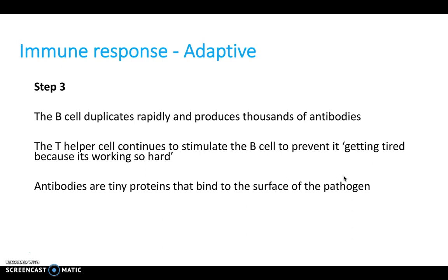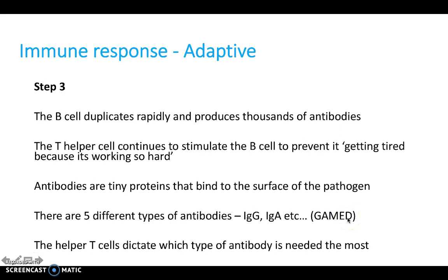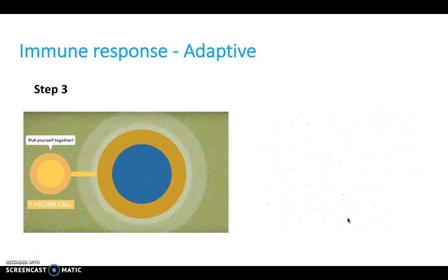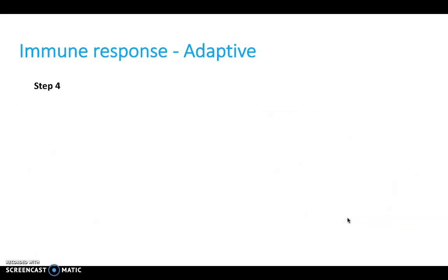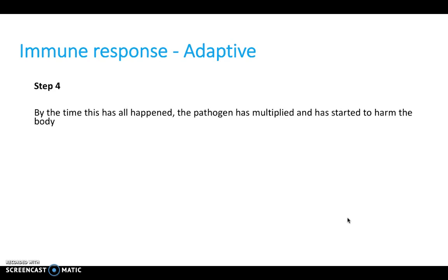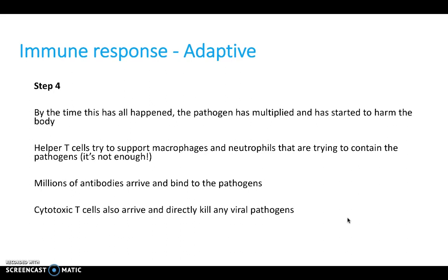Antibodies are tiny proteins that bind to the surface of the pathogen. There are five different types of antibodies, remembered via the GAMED analogy — IgG, IgA, IgM, IgE, IgD. The helper T cells detect which type of antibody is needed most. By the time all this has happened, the pathogens have multiplied and started to harm the body — we're pretty unwell at this point. Helper T cells try to support macrophages and neutrophils, but it's not enough.